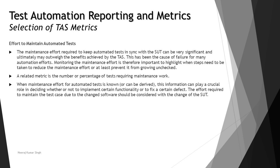A related metric here is the number or percentage of tests requiring maintenance work, because not all 100 test cases need to be maintained — possibly only 10, 15, or 20 need updating, and those should be targeted. When maintenance effort for automated tests is known, it can play a crucial role in deciding whether to implement certain functionalities or fix a certain defect. For example, if fixing a defect requires a lot of scripts to be updated, you might seek an alternative approach. The effort to maintain tests due to software changes should be synchronized with those changes.